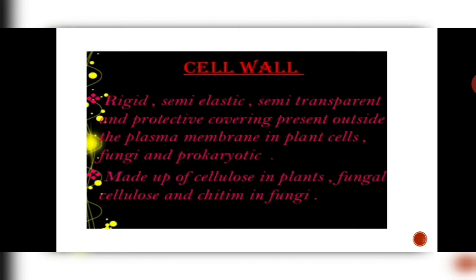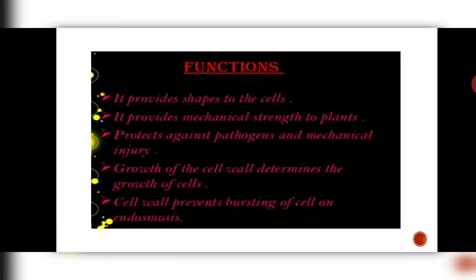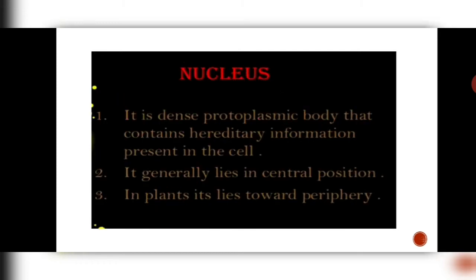The next thing to discuss is cell wall. Cell wall is a rigid, semi-elastic, semi-transparent protective covering that is present outside plant cells, fungi and various prokaryotes. It is not present in animal cells. Its functions: it gives shape to the cell and provides mechanical strength to the plants. It protects them against pathogens and mechanical injuries. Growth of the cell wall determines the growth of the cell — when the cell wall has taken its final size, the cell will not grow further. Also, it prevents the bursting of the cell during endosmosis and prevents crushing during exosmosis.